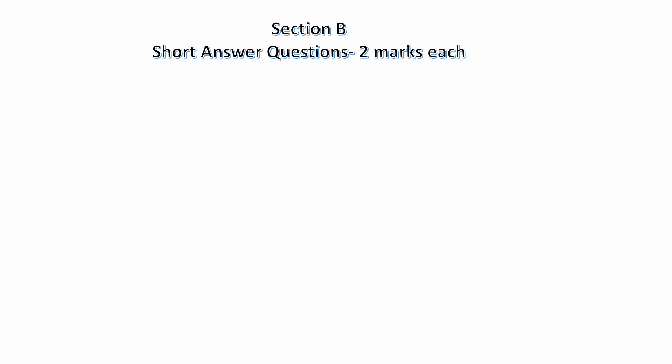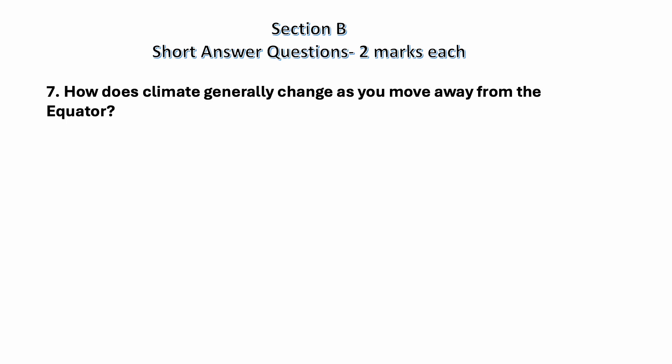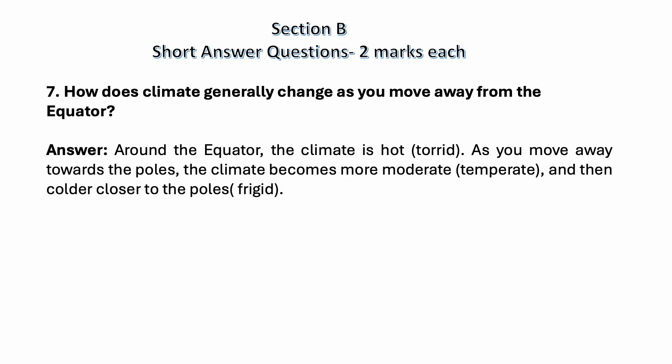Section B — short answer questions, two marks each. How does climate generally change as you move away from the equator? Around the equator the climate is hot — that is the torrid zone. As you move away towards the poles, the climate becomes more moderate or temperate, and then colder closer to the poles — that is the frigid zone.